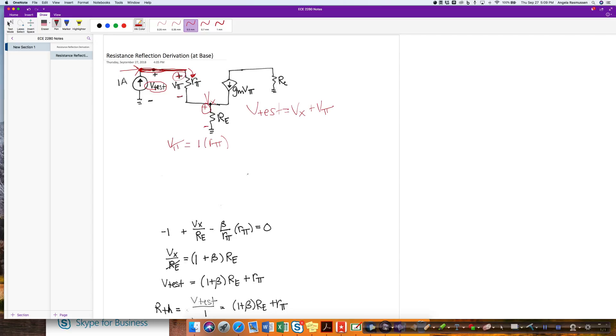And Vx, I can do a node voltage. So the current in this branch is going to be minus 1. The current in this branch is Vx over Re. And the current in this branch is minus Gm Vpi.